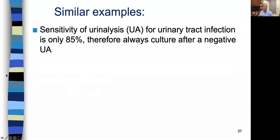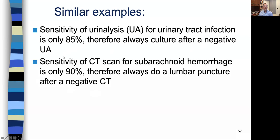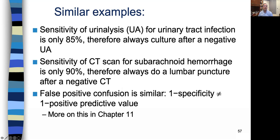There are lots of examples of this in clinical medicine. People say the sensitivity of a urinalysis for a urinary tract infection is only about 85%, therefore always do a culture after a negative urinalysis — this is still often said in pediatrics, especially in infants. Or: the sensitivity of a CT scan for subarachnoid hemorrhage is only 90%, therefore always do a lumbar puncture after a negative CT. The same issue comes up with false positive confusion, where people mix up one minus specificity with one minus positive predictive value — a mistake people make when they interpret p-values as the probability of a type one error overall rather than given the null hypothesis. But that is the topic of another talk.